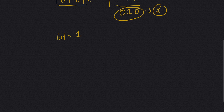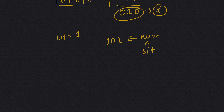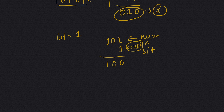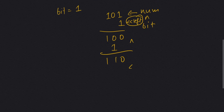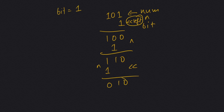With bit equal to 1, after XOR for the first time it becomes 1 0 0. Then we move bit to the left using a left shift by 1. We do XOR again and it becomes 1 1 0. Again we move bit to the left by 1 and perform XOR — it becomes 0 1 0 and we can return 2.